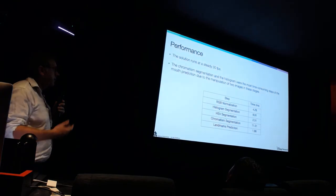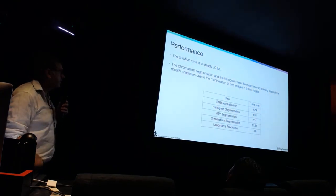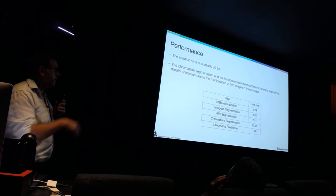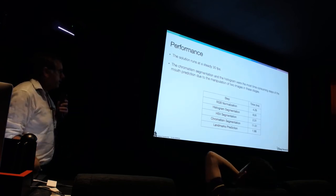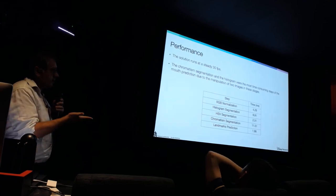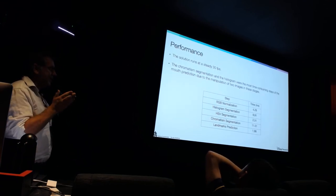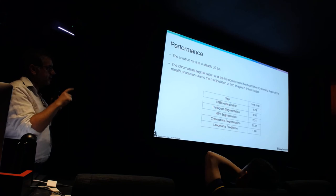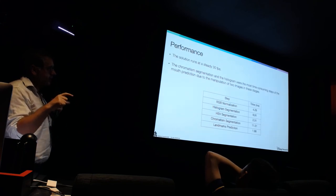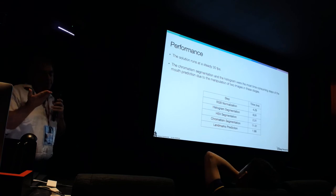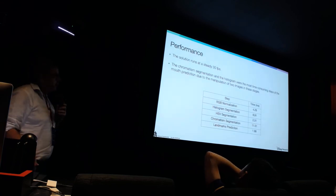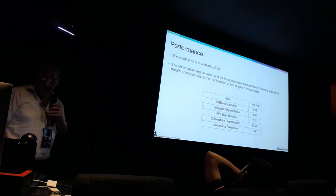For performance, our system is implemented in Unity at around 30 frames per second, fully functional. This is a breakdown of each step of the algorithm: the landmark prediction itself is actually very quick, but our robustness steps for the segmentation take a little longer in the Unity script implementation. So it could actually be a lot faster than this.